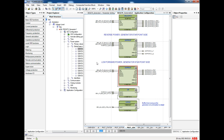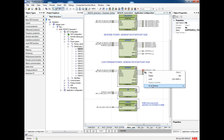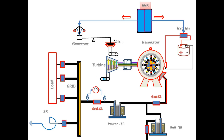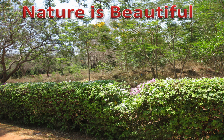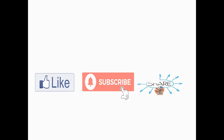Now we will go for the protection trip configuration. For low forward power trip, it will trip all the CBs. On the next video I am planning to make reverse power protection. We have come to the end of this section — see you on the next video. If you like this video then please share with your friends and colleagues. Take care and bye from Bernitech channel, thank you for watching.